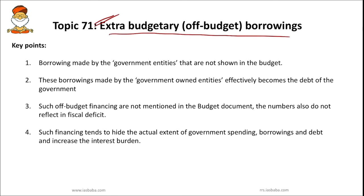Even the IMF has pointed to the fiscal deficit suppression happening in India. Therefore it is important to understand this concept. These borrowings are made by government entities to run various government schemes that are not shown in the budget. The key point is that these borrowings are made by government entities and are not shown in the budget. They may be done to finance some budgeted schemes like food subsidy, and may be done by government-owned entities like the Food Corporation of India.